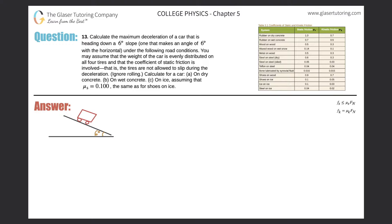Number 13. Calculate the maximum deceleration of a car that is heading down a six-degree slope — one that makes a six-degree angle with the horizontal — under the following road conditions. You may assume that the weight of the car is evenly distributed over all four tires and the coefficient of static friction is involved; that is, the tires are not allowed to slip during the deceleration. Calculate for the car on dry concrete.